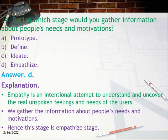Question 14: During which stage would you gather information about people's needs and motivations? A) Prototype, B) Define, C) Ideate, D) Empathize. Answer D. Explanation: Empathy is an intentional attempt to understand and uncover the real unspoken feelings and needs of users. We gather information about people's needs and motivations during the Empathize stage.